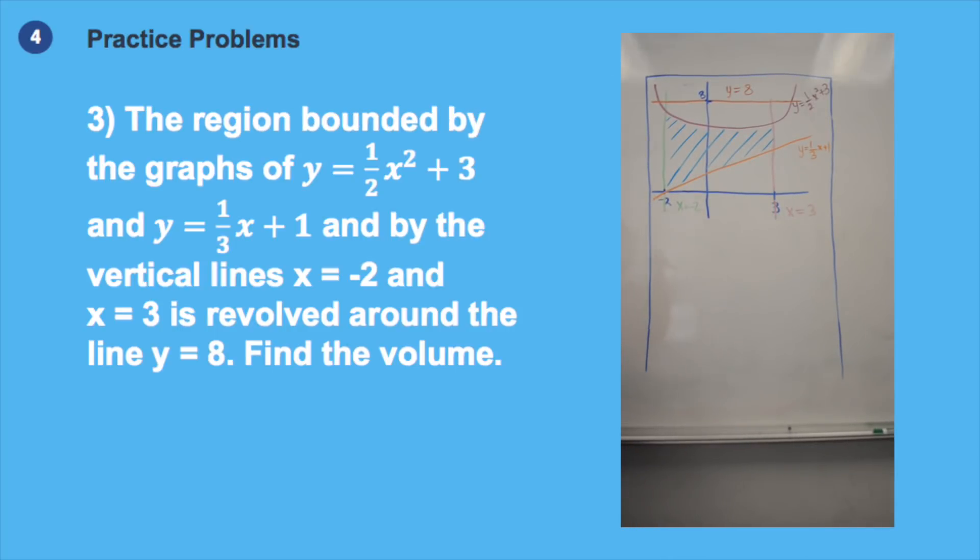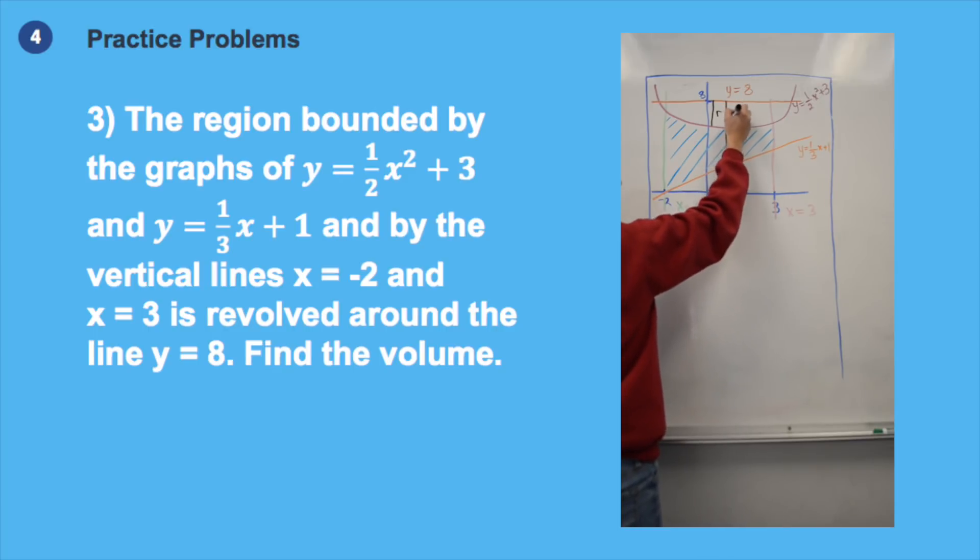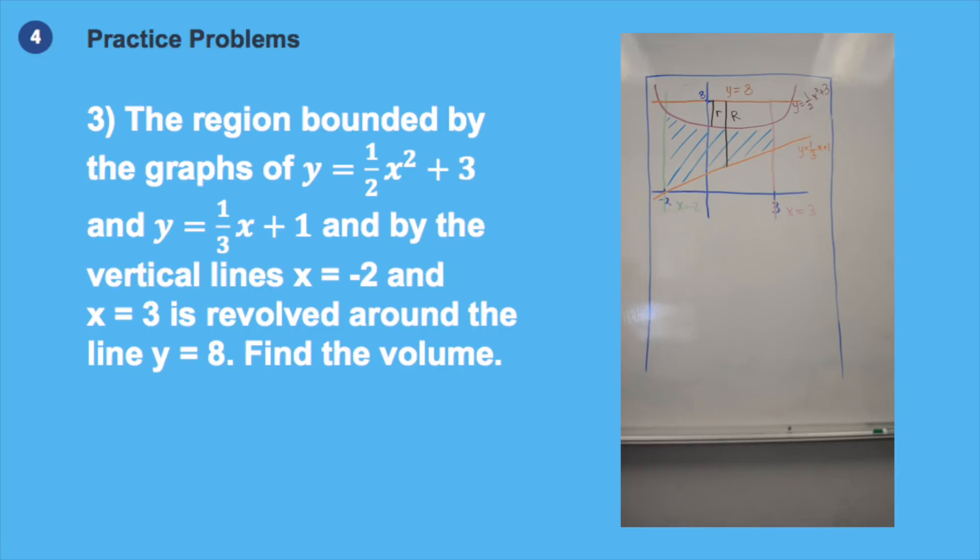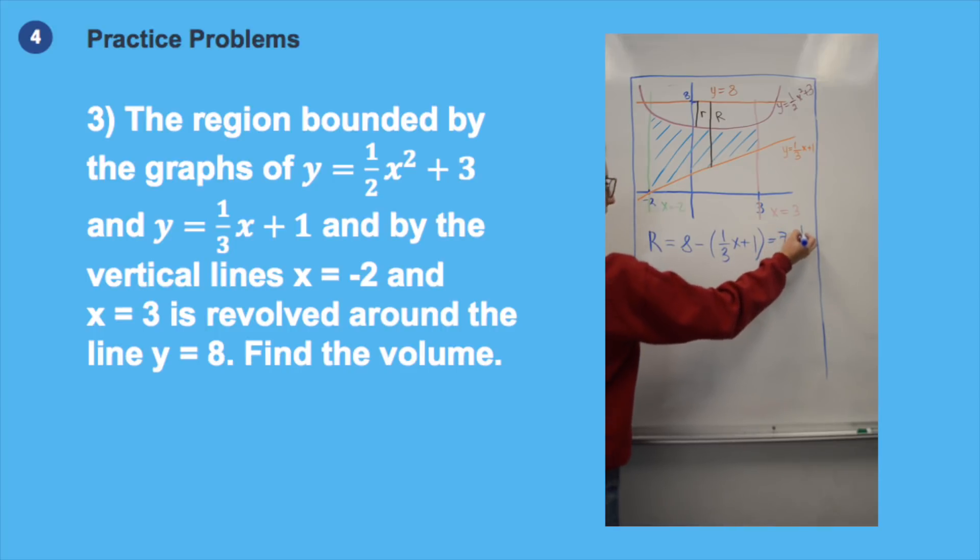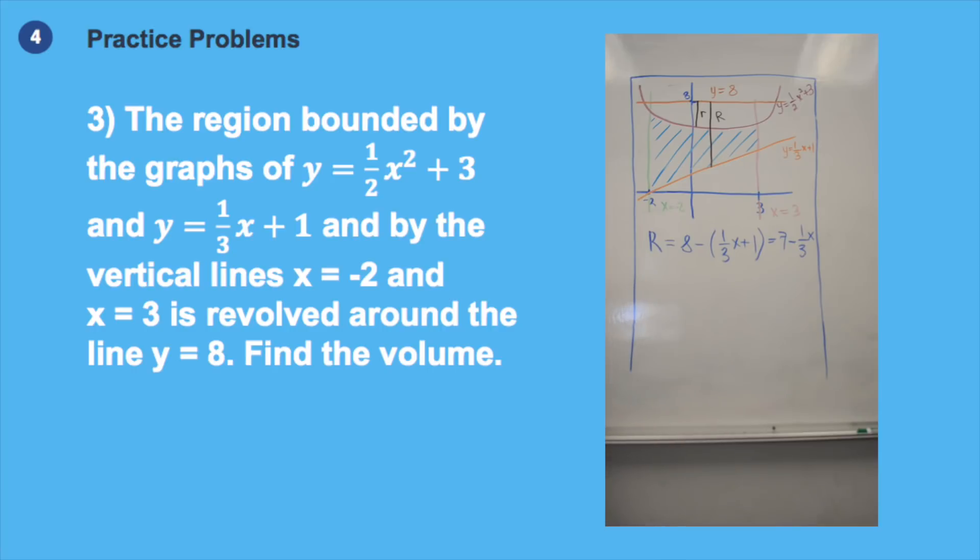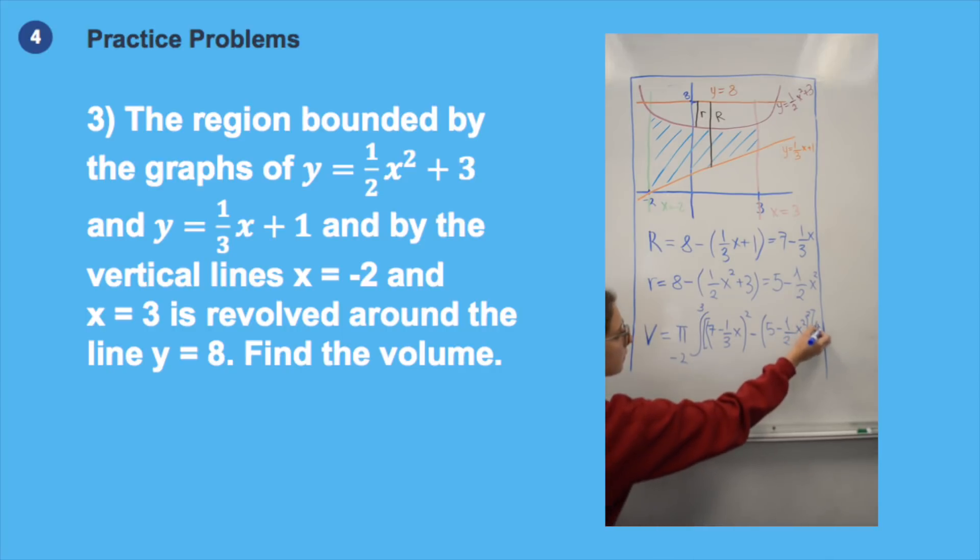In this question, we're asked to find the volume of a figure generated by rotating a figure along the line y equals 8. When we rotate this shape along a line, we get an outer radius and an outer radius that is empty space. So in order to find the volume, we have to find the difference between these two regions. The outer radius r can be calculated by finding the distance from line y equals 1 over 3x plus 1 to the line y equals 8. And the inner radius can be defined by finding the distance from y equals 1 over 2x squared plus 3 to the line y equals 8. After calculating the inner and outer radius, we calculate our function by taking their difference. After we plug in the values we have to our volume formula and integrate it.